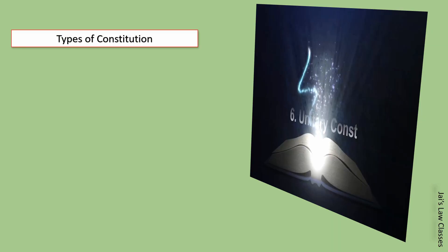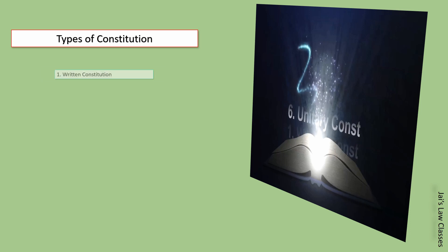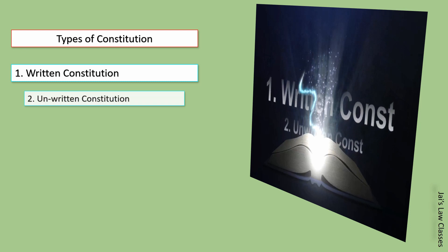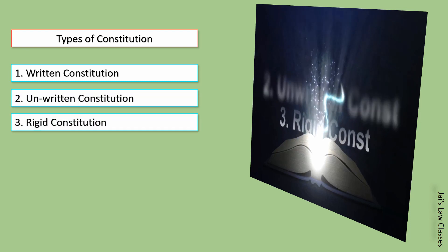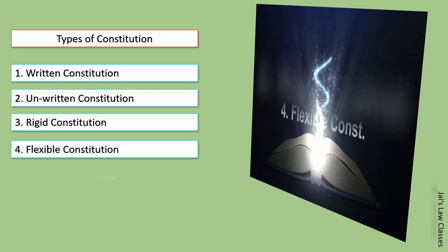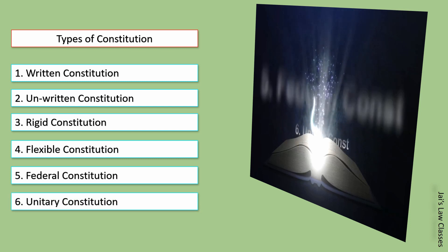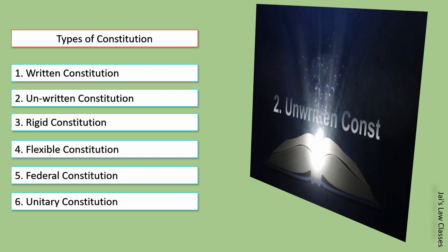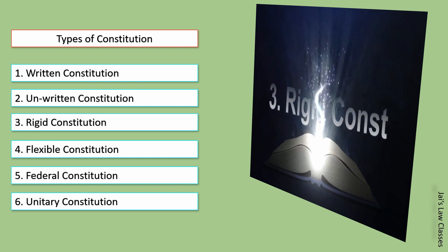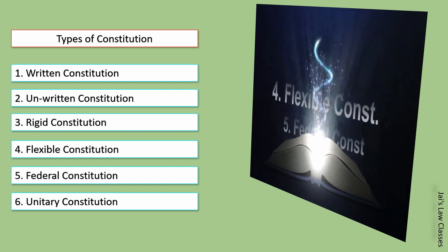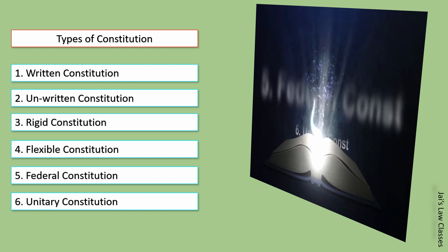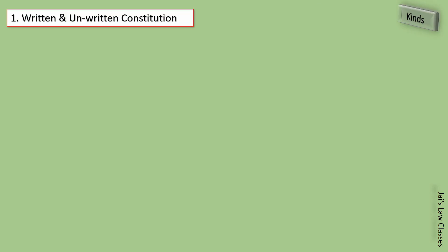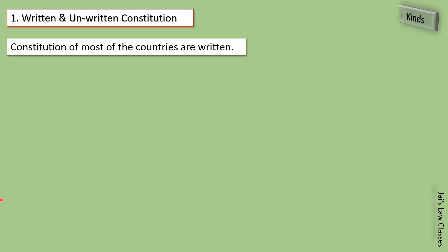Now we come to the main question: types of constitution. They are — written constitution, unwritten constitution, rigid or flexible constitution, and federal or unitary constitution. The constitutions of most countries are written; you will mostly find written constitutions.